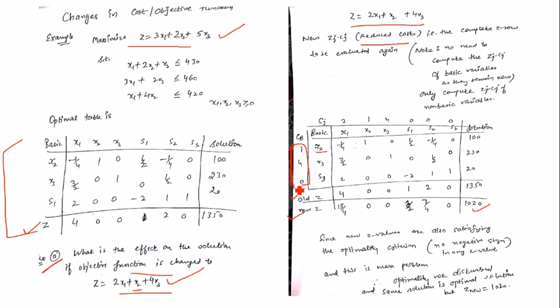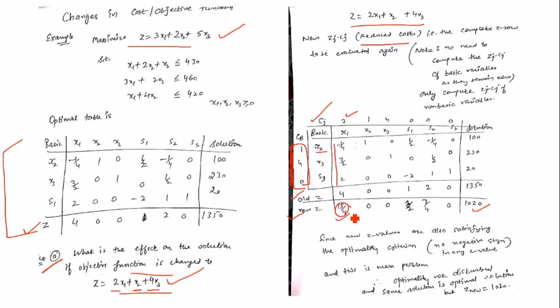We write the new cj values: cost of x1 is 2, cost of x2 is 1, cost of x3 is 4, and 0, 0, 0 for slack variables. Computing zj − cj for x1: cb vector dot column of x1 minus cj gives 1 × (−1/4) + 4 × (3/2) + 0 × 2 − 2, which equals 15/4.